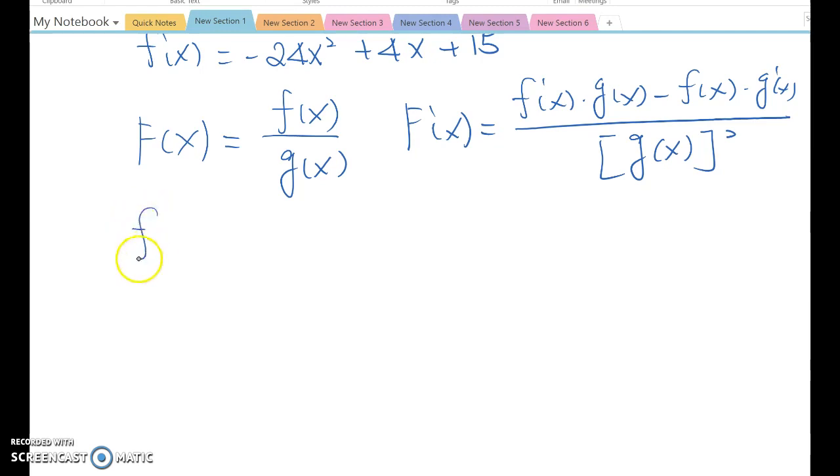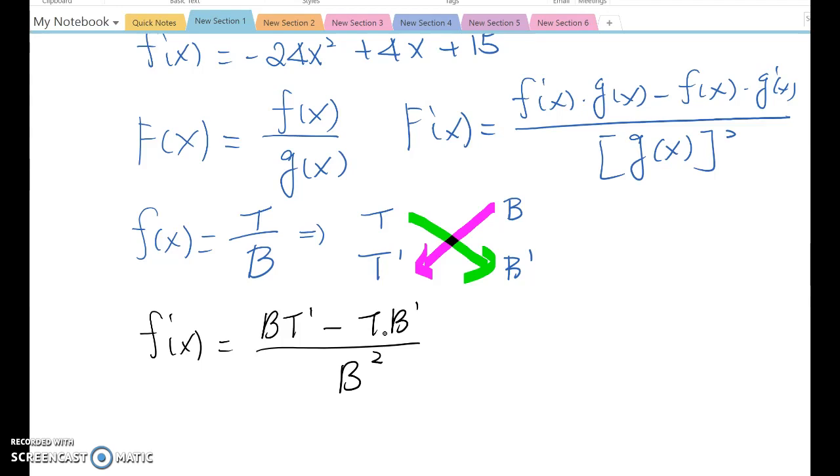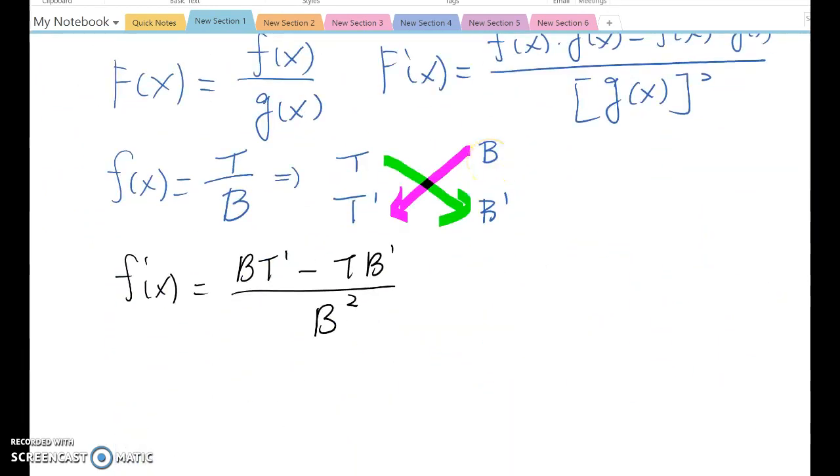Let's say f(x) equals top over bottom. Then you set up T and T prime, and B and B prime, and always go in this direction first and secondly this direction. F prime x equals B times T prime minus T times B prime, over B squared. Of course, we can use a and b as well, but if I use a and b for the quotient rule too, this looks a little bit confused with the product rule. That's why I'm using different alphabets for the quotient rule.